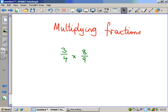If we're asked to multiply 3 quarters by 8 ninths, the technique here is different to the technique we use when we're adding or subtracting fractions. But it's very straightforward. To multiply fractions, all you do is multiply the numerators and you multiply the denominators and you get an answer.